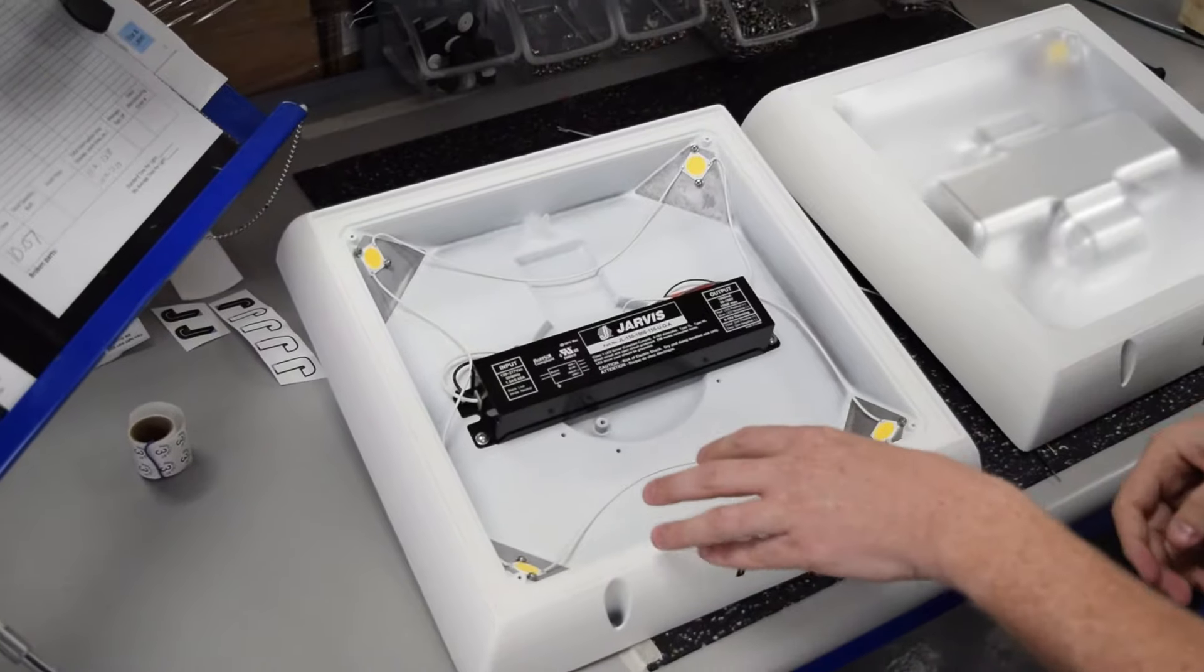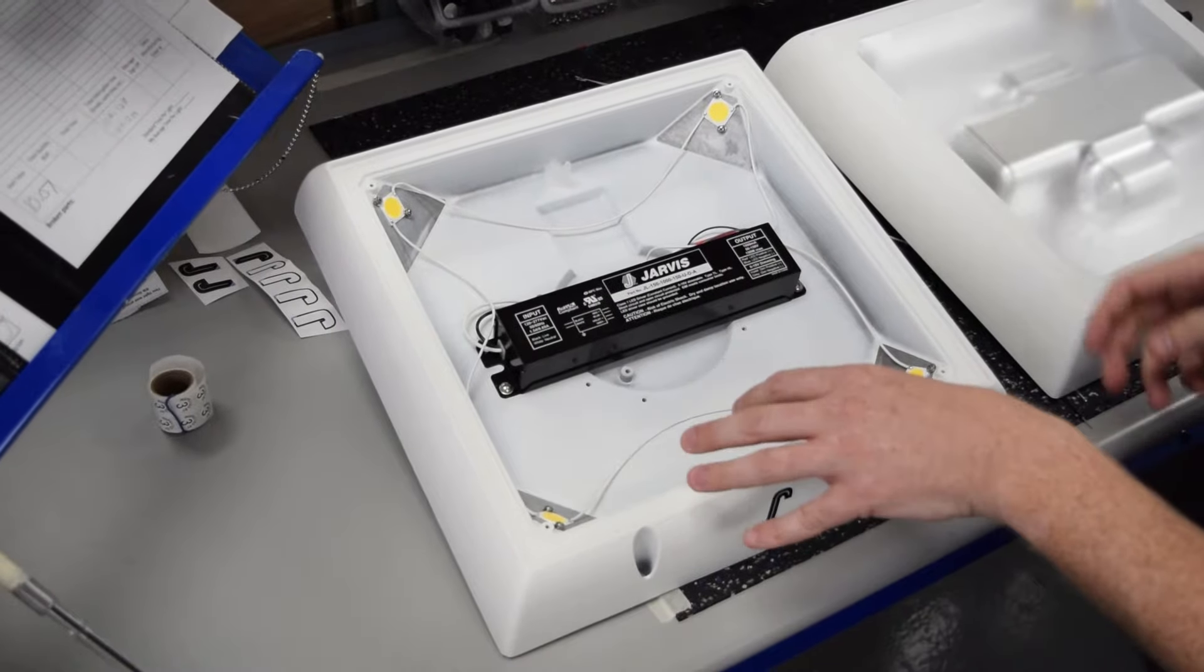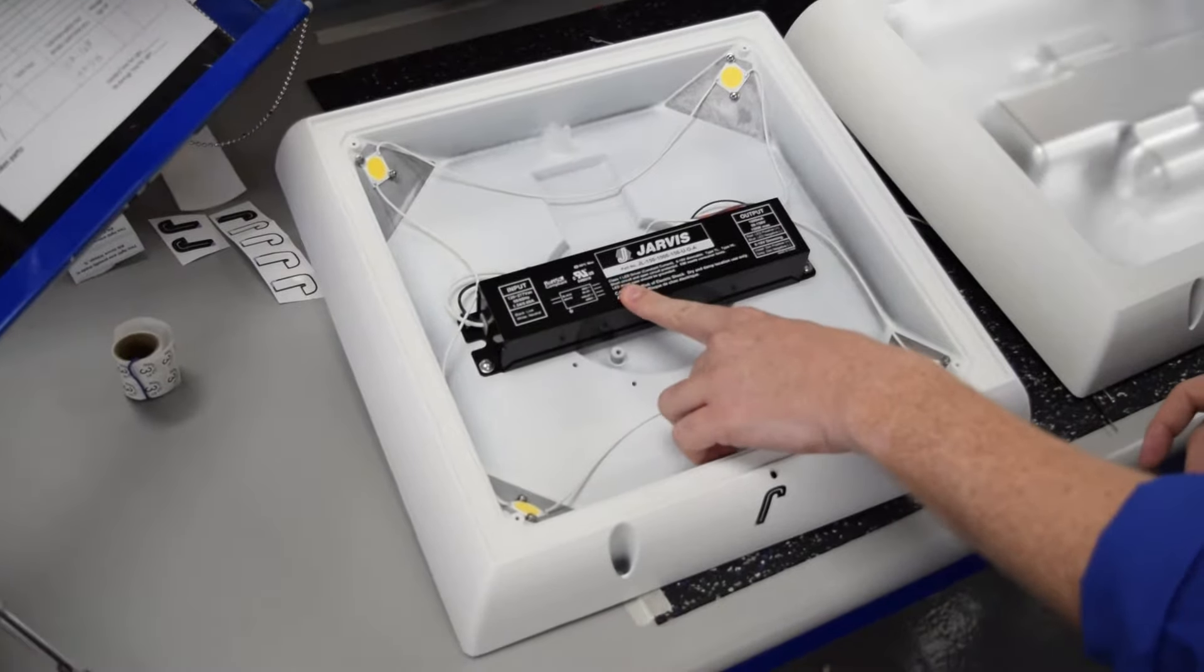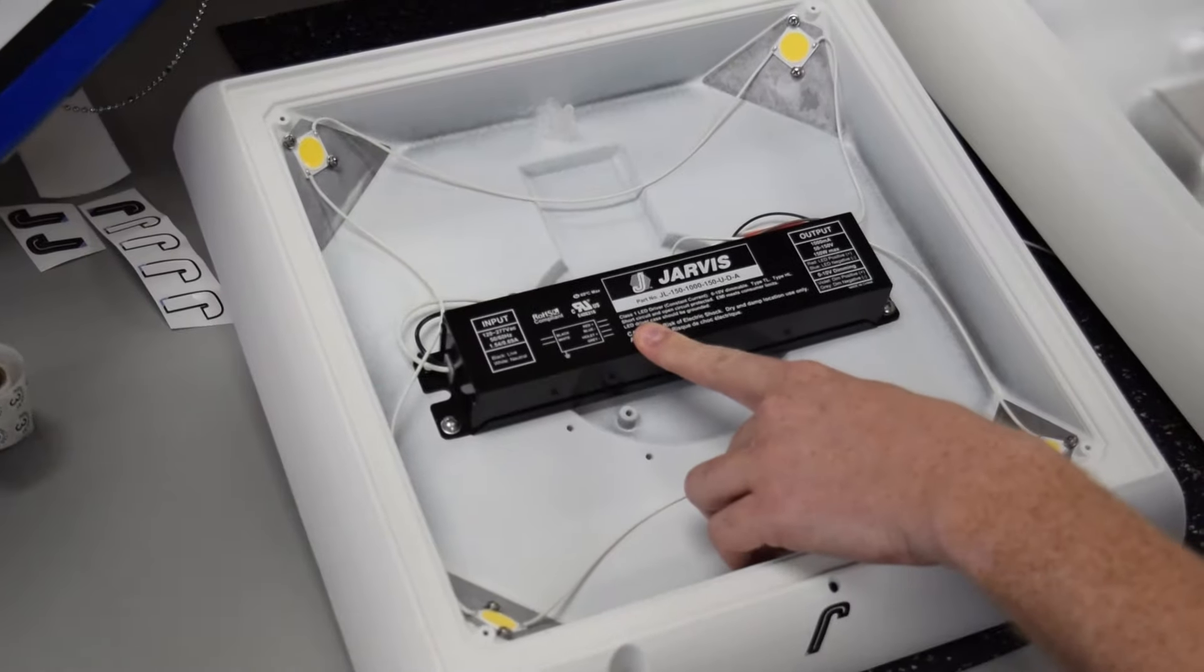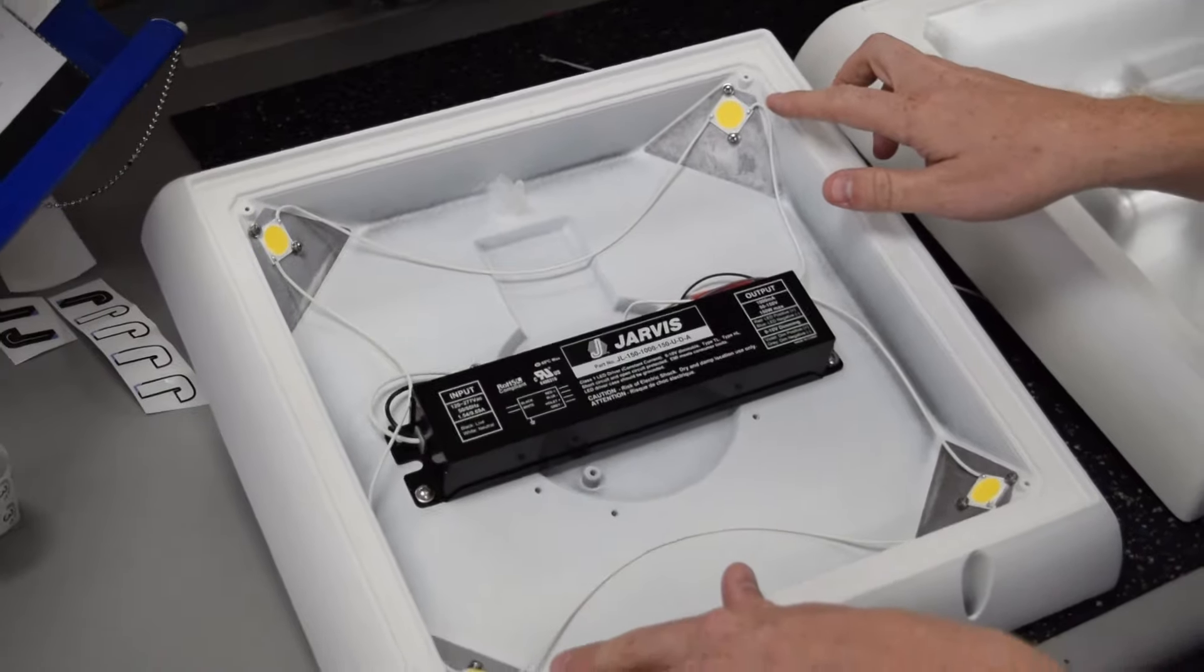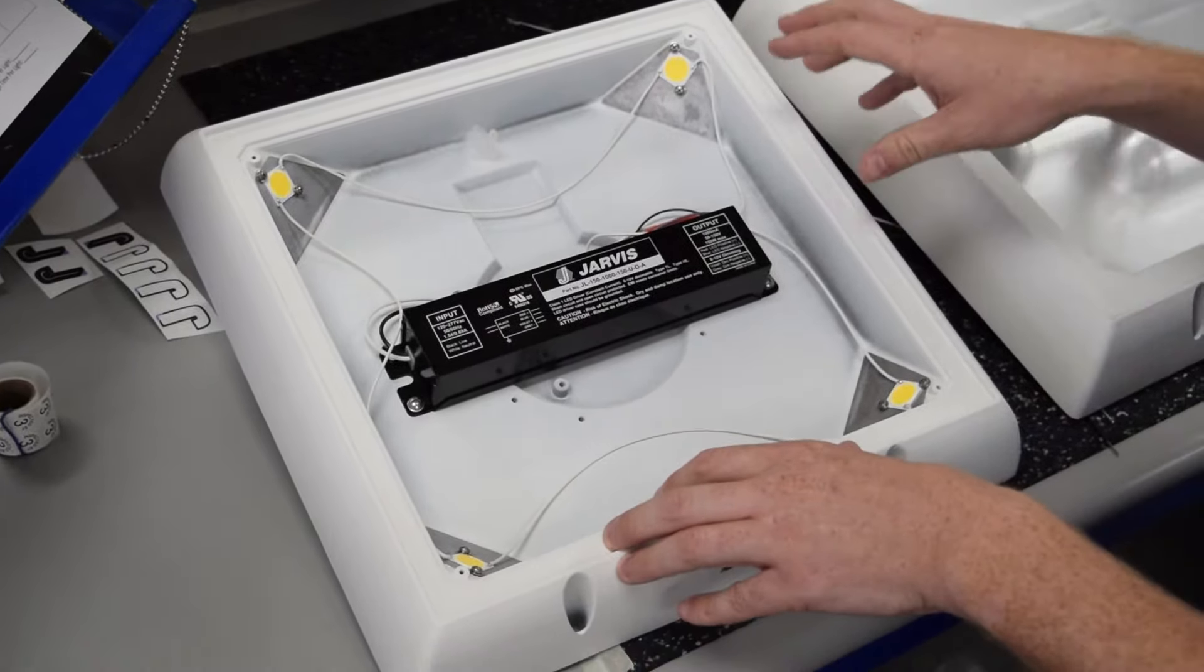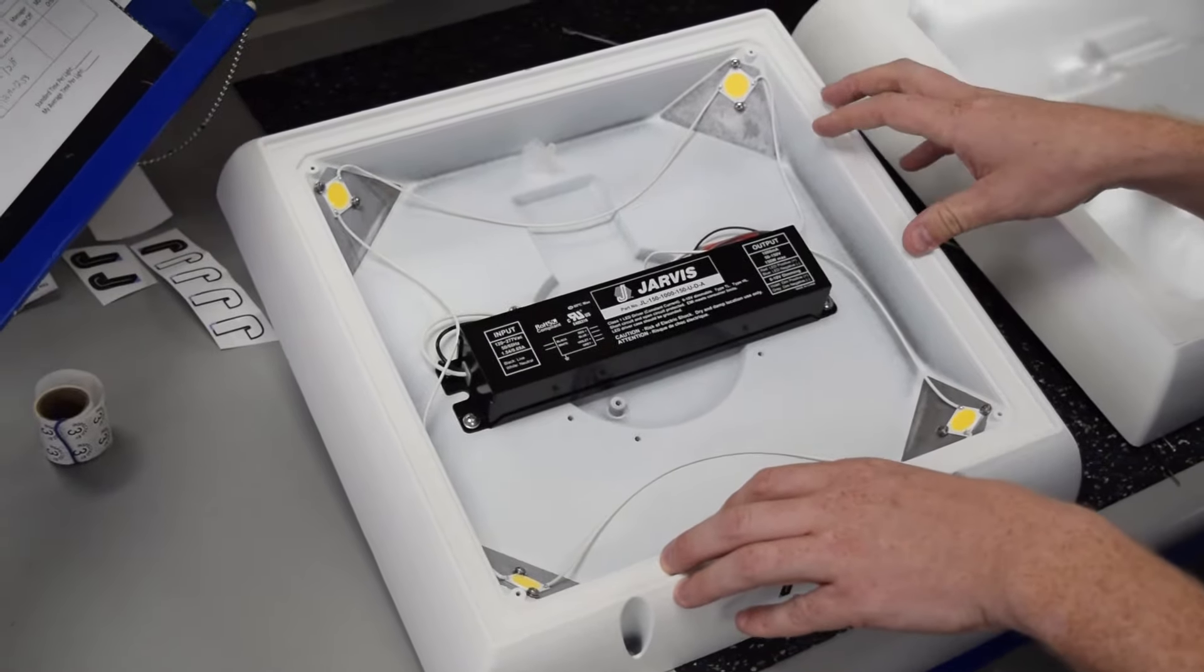This is what the light looks like inside. You're only looking at a few things here. First, you're looking at our integrated Jarvis power supply. Second, you're looking at our four heavy-duty LEDs. And third, you're looking at our single-piece die-cast aluminum housing.